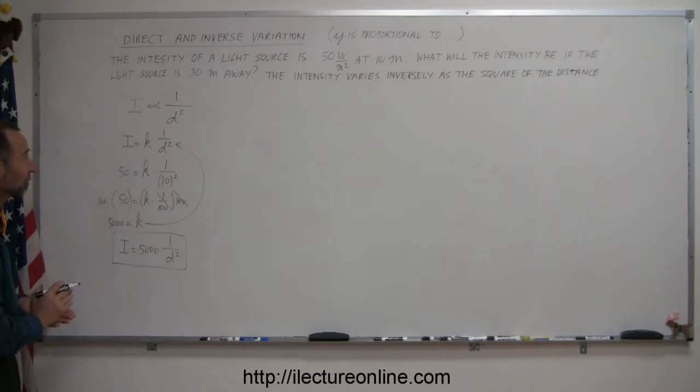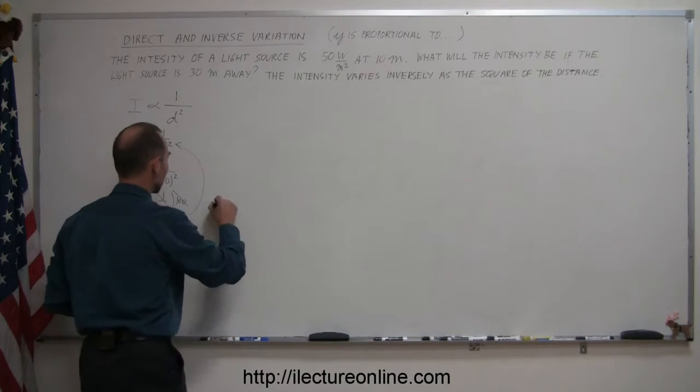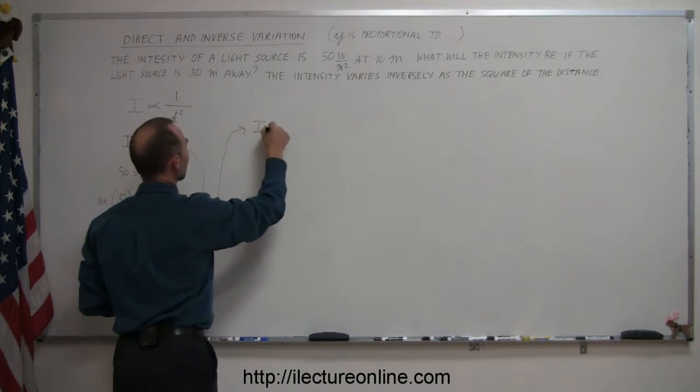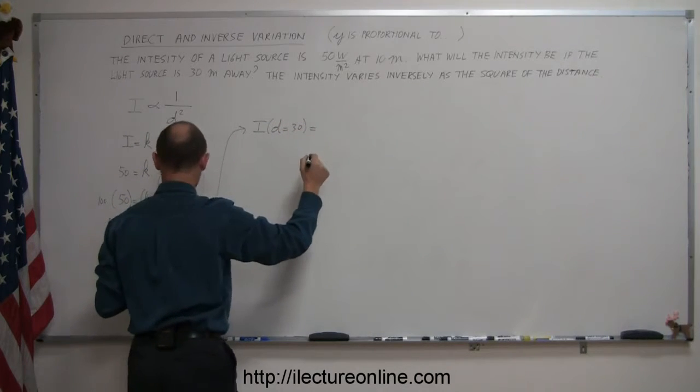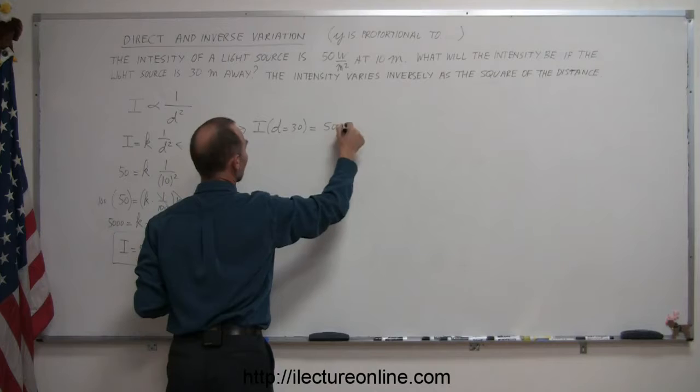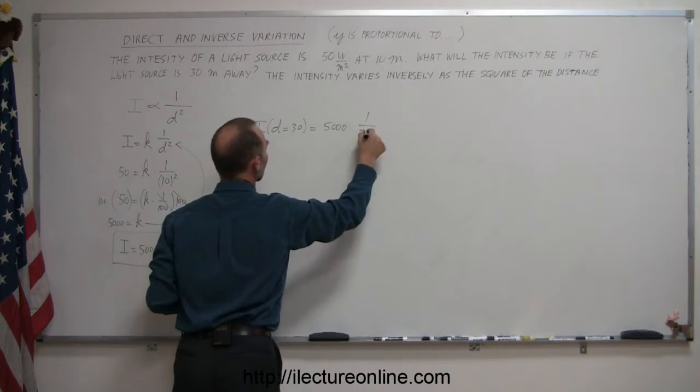Now we can use that equation to figure out the second part of the problem, where they want us to find out what the intensity will be when the source is 30 meters away. So then we write the intensity when d is equal to 30 meters is equal to 5,000 times 1 over 30 squared.